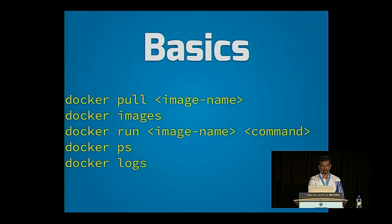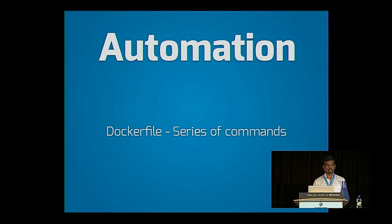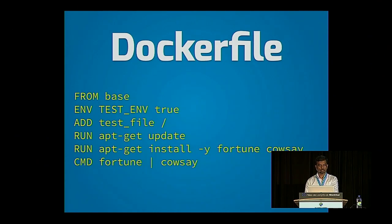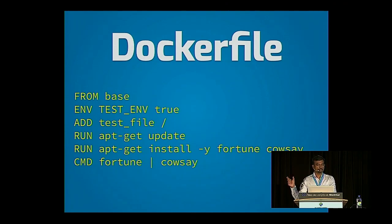We've introduced registries, repositories, and basic commands: pull, list images, run, PS, logs. But those are created by hand — you type one at a time. Dockerfile allows you to automate all of this. Here's an example: FROM the base image as your starting point, ENV to set environment variables, ADD to add local files into the image, RUN to run commands during image creation — the update and apt-get install will happen automatically. The CMD command is the default program that launches if you omit a program from Docker run.